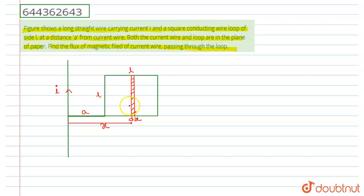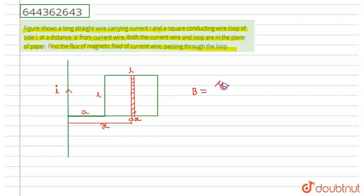We have to find the flux through this loop. Let us consider a small portion — this dx portion at x distance from the wire. We have to find the flux passing through this small portion of this loop. We can find the magnetic field due to this wire at a distance x. The magnetic field at distance x from the wire is equal to μ₀I divided by 2πx.